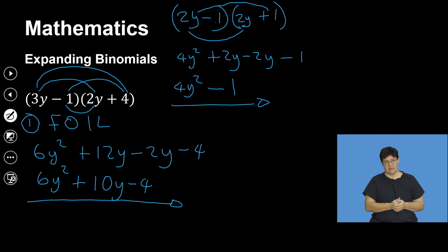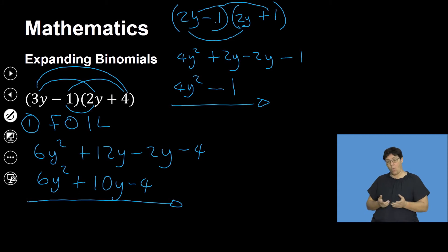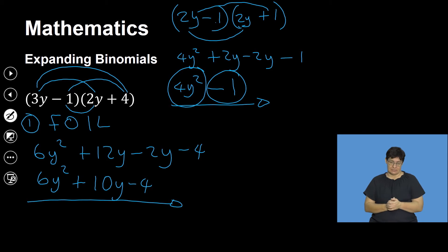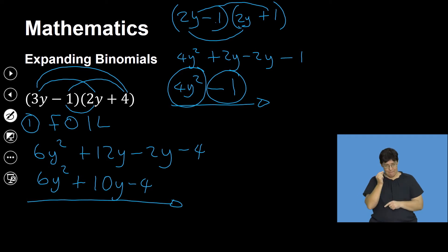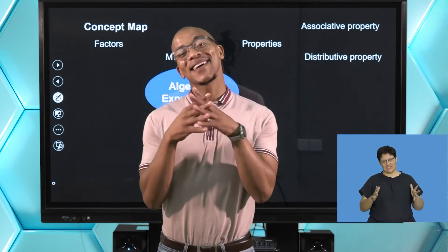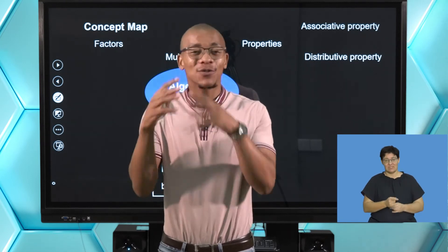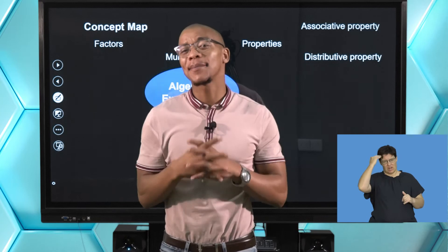At times when you're multiplying two binomials, you get three terms — a trinomial. Or you can multiply two binomials and instead of getting three terms, you get two terms that are subtracting each other. We're going to give this a name at a later stage. Let's take a quick break, freshen up our brains, and come back to do some more work. Stay tuned.